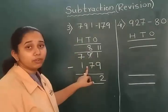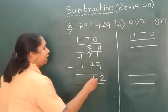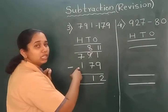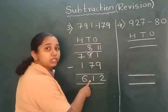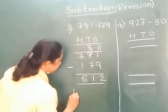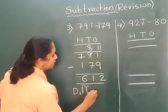Now 8 minus 7 becomes 1, and 7 minus 1 is 6. So our answer is 612. To this we also call it as difference.